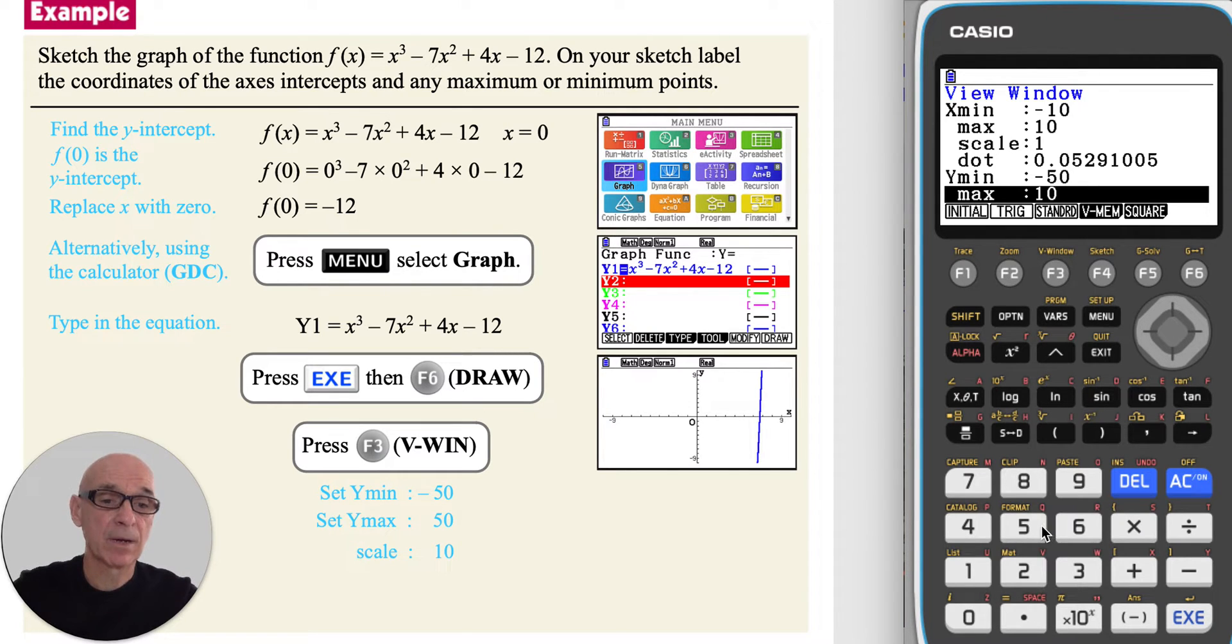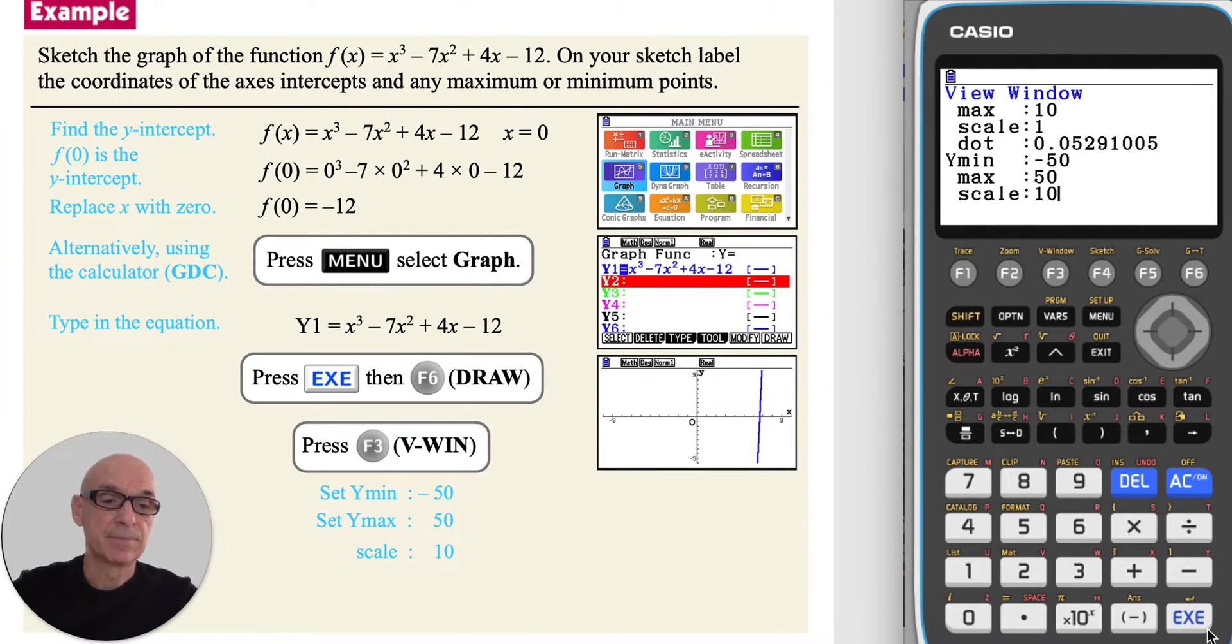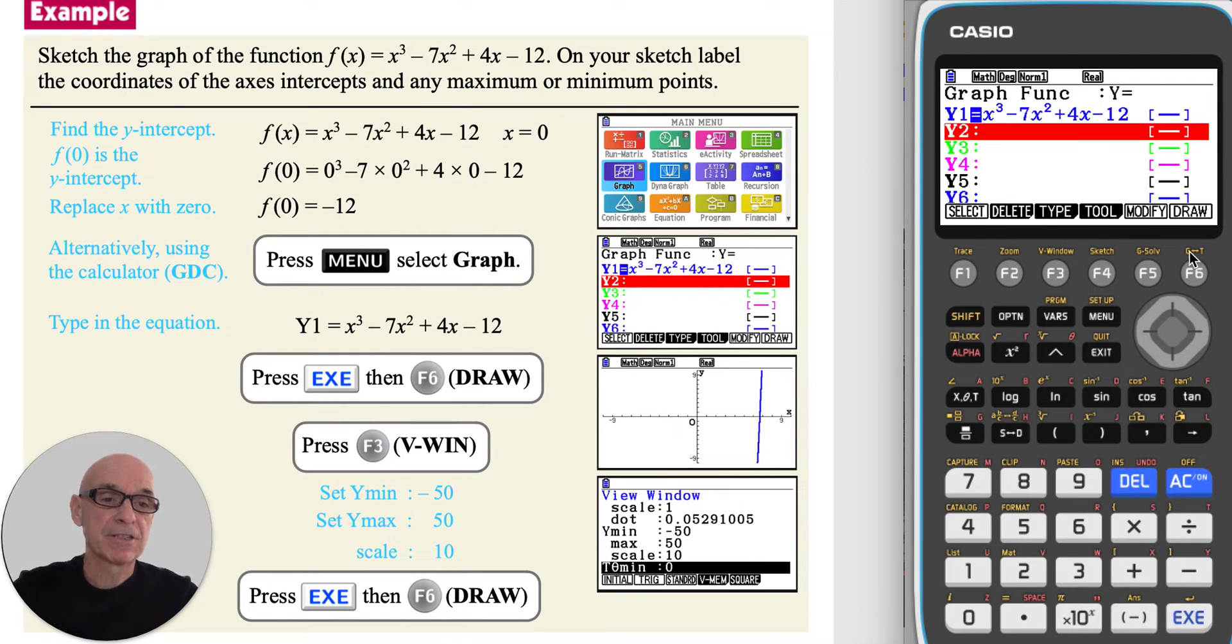Pressing y max, setting y max to 50, and y scale to 10. Pressing execute, and pressing f6 to draw the graph of the function again.